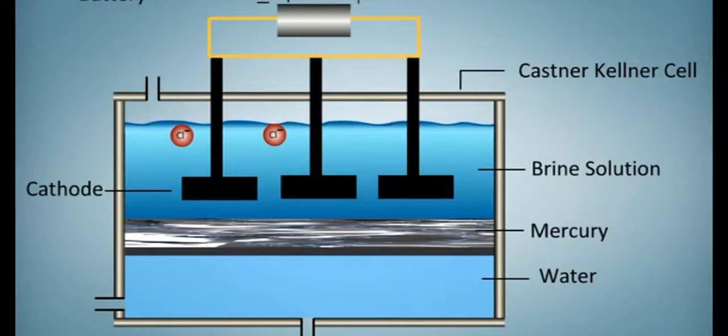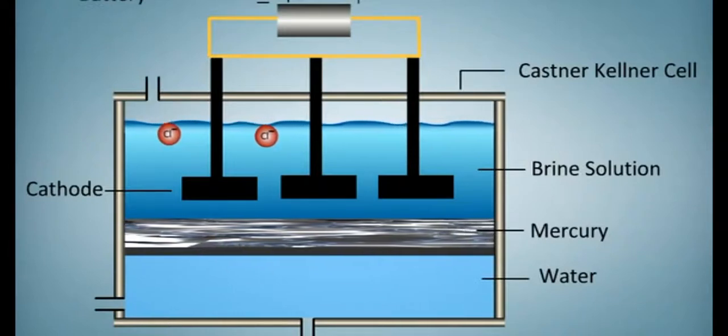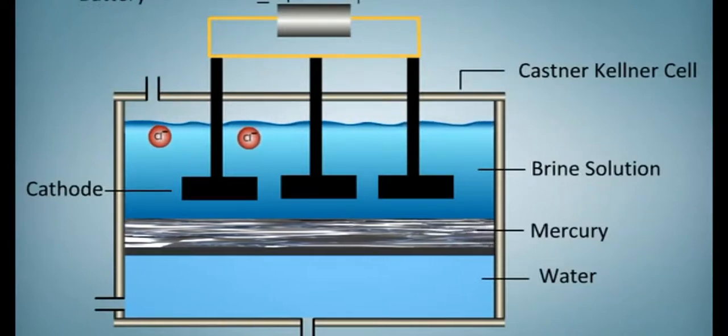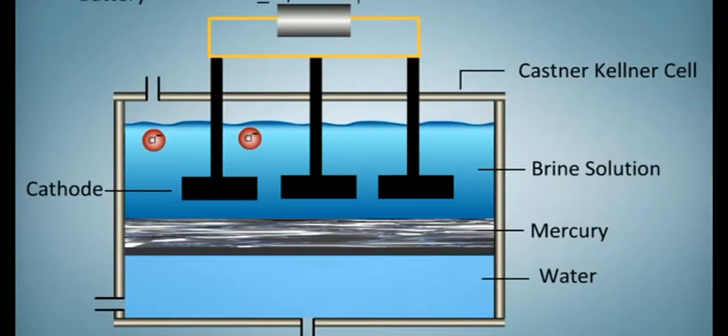The cell consists of a rectangular iron tank in which mercury flows along the bottom of the cell and is made cathode.